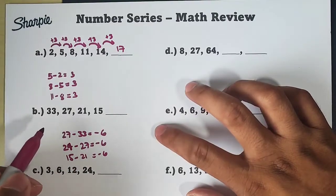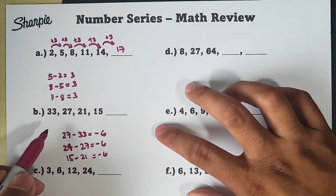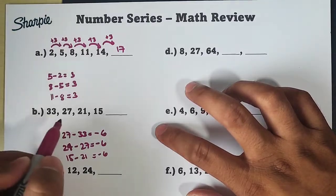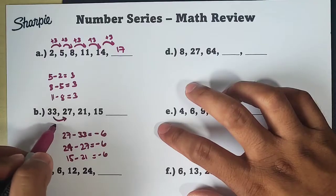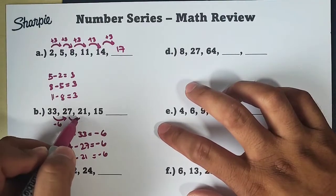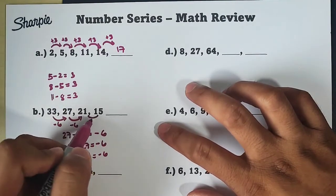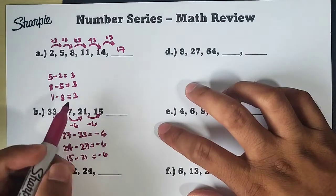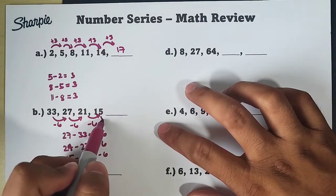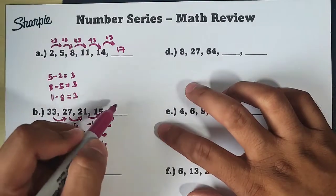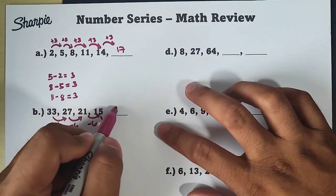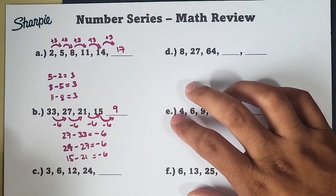So, as you can see, nag-subtract tayo ng 6, or mag-add tayo ng negative 6, para makuha natin yung succeeding terms. Parang ganito lang: minus 6, minus 6, minus 6. Now, to get the next term, yung 15 natin, bawasan natin ng 6, minus 6 tayo. Ibig sabihin, guys, the correct answer here is 9.